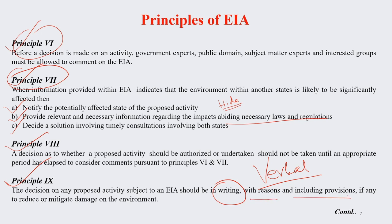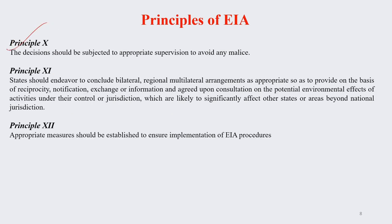With provisions for anyone to reduce or mitigate the damage to the environment, these must be given in written form. Number 10: the decision should be subjected to appropriate supervision to avoid any kind of wrongdoing or malpractice. Number 11: the involved states should endeavour to conclude bilateral, regional, and multilateral arrangements as appropriate, so as to provide on the basis of reciprocity — proceedings should be notified in advance, with exchange of information and agreement for consultation on the potential environmental effects.